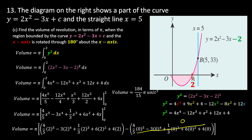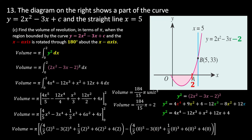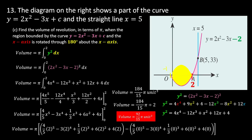The result before the half-revolution adjustment is 184/15 π. However, the region only rotates 180°, giving half a solid, so we divide by 2 to get 92/15 π unit³. This produces a half-solid shape rather than a full solid of revolution.